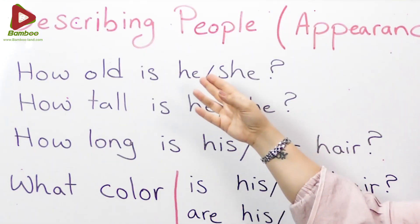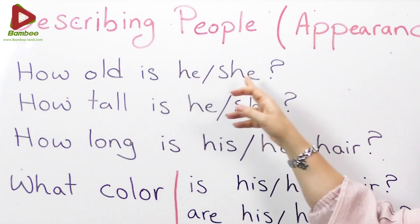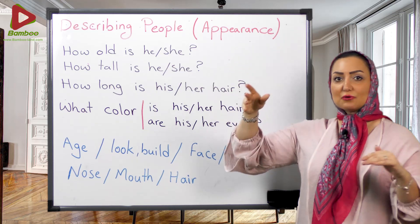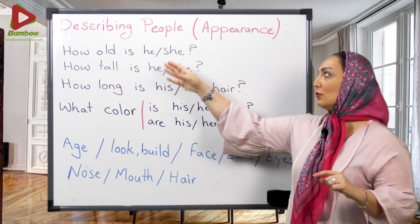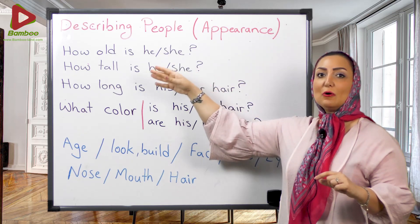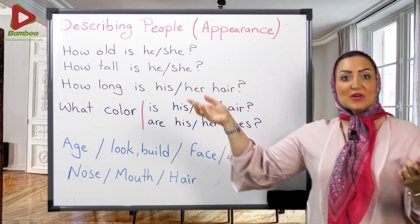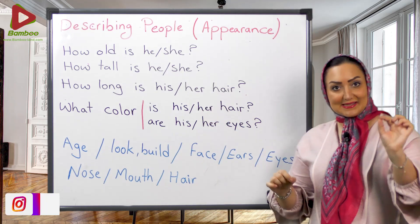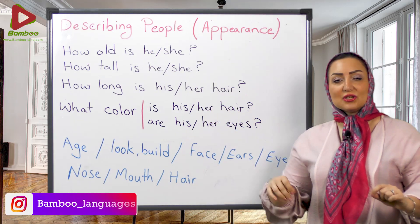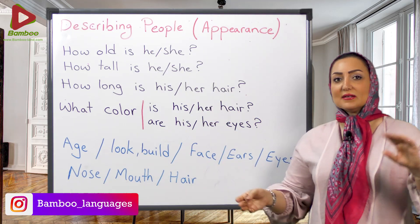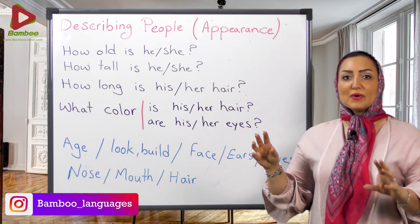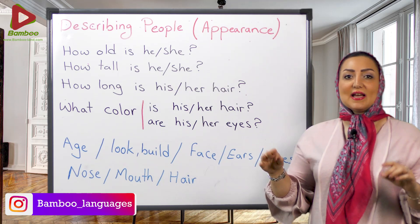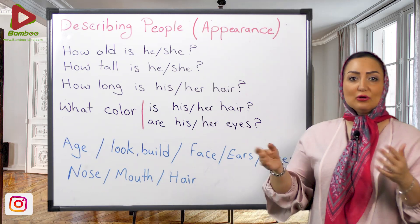How old is he or she? It depends — we are talking about he or she: How old is he? How old is she? We can say the exact age: he's 20, he's 30, he's 50. Or we can just use expressions like young, old, etc.